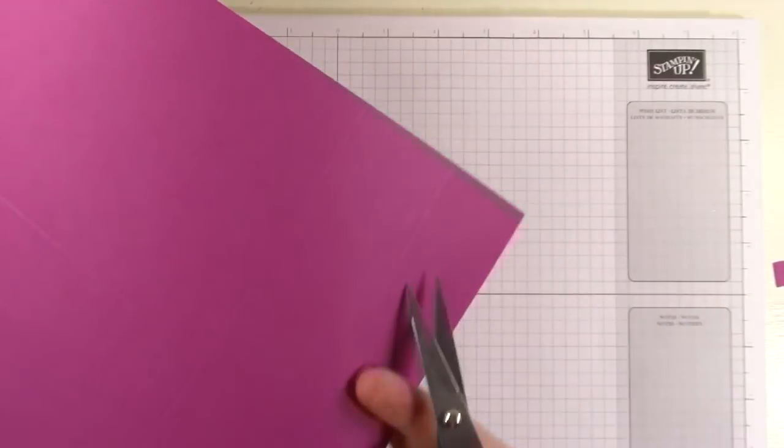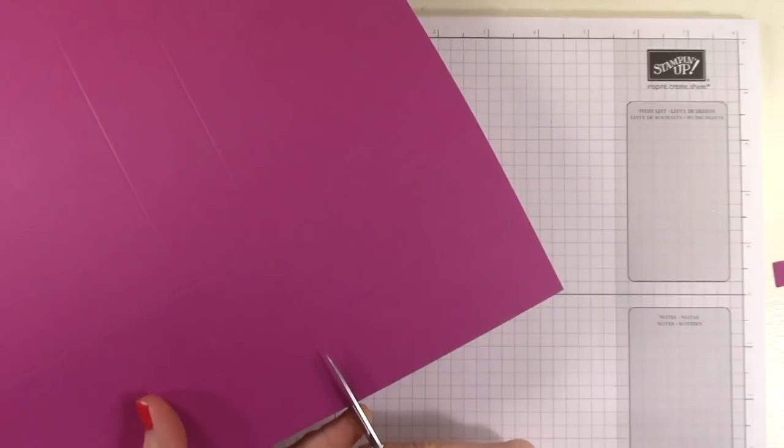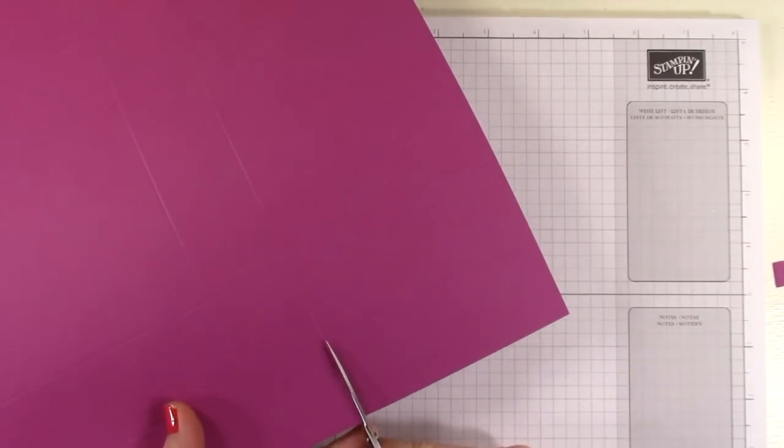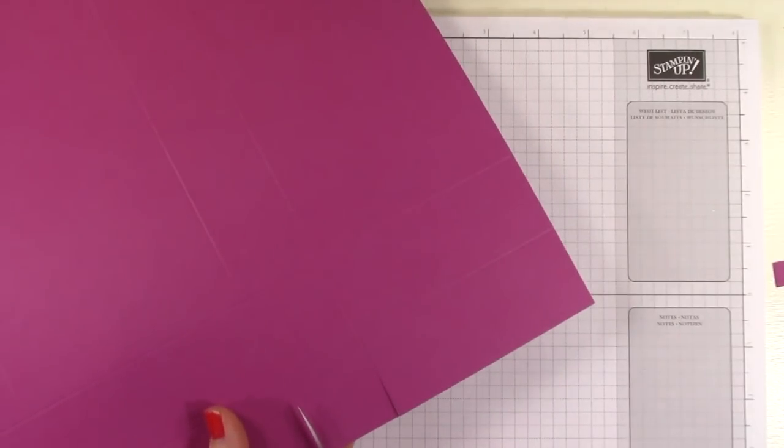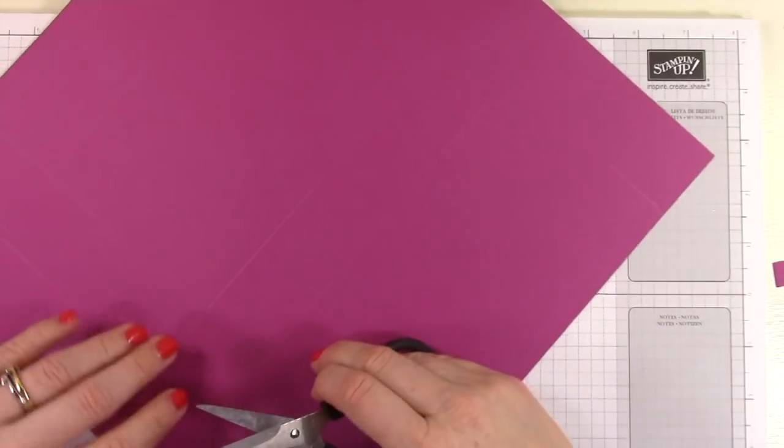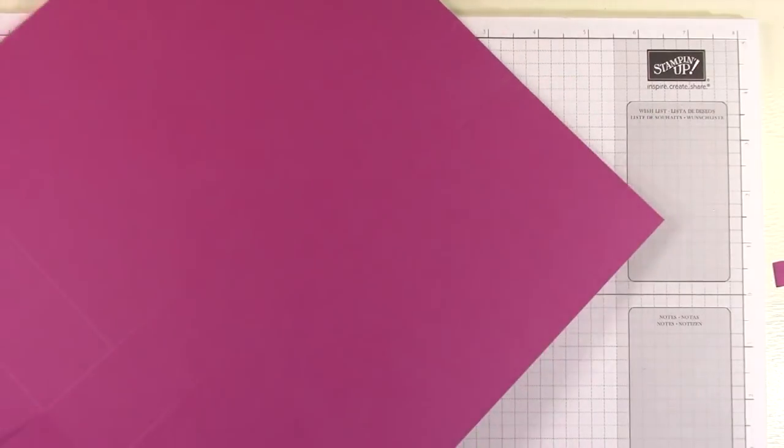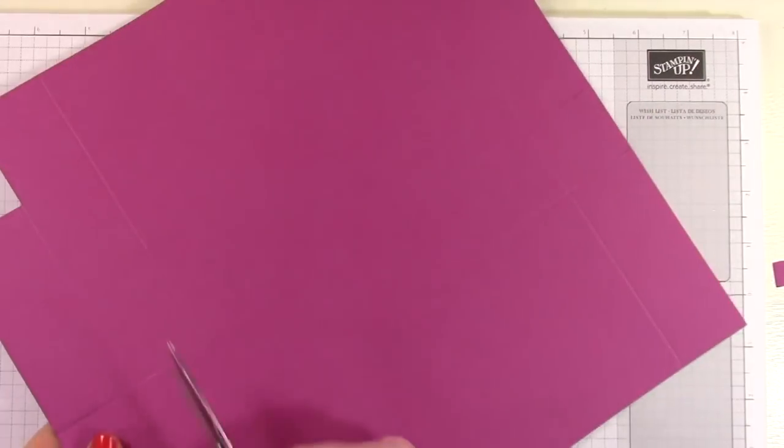Then we're going to turn the box around. And this is the top. That first big four inch chunk, we're going to cut in on that score line and on this score line only to the first score line for the top. Then we're going to fold up and over the first tab so that we can cut away this little center tab.